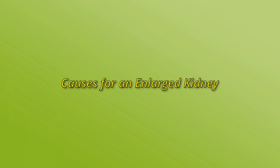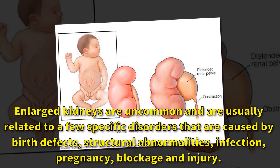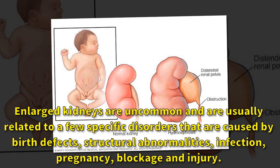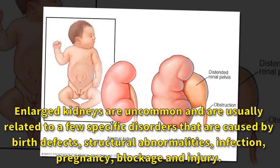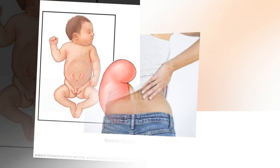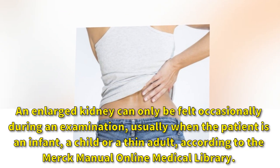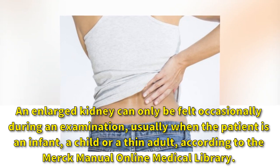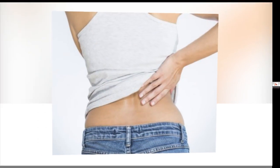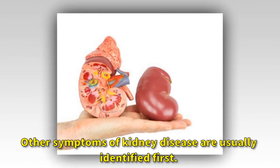Causes for an enlarged kidney. Enlarged kidneys are uncommon and are usually related to a few specific disorders caused by birth defects, structural abnormalities, infection, pregnancy, blockage, and injury. An enlarged kidney can only be felt occasionally during an examination, usually when the patient is an infant, a child, or a thin adult, according to the Merck Manual Online Medical Library. Other symptoms of kidney disease are usually identified first.